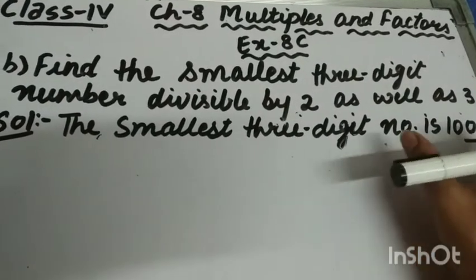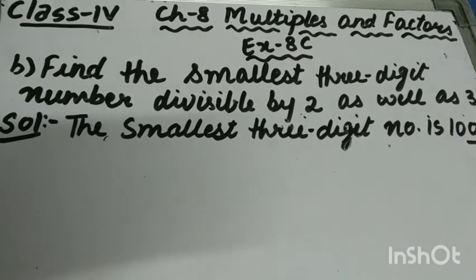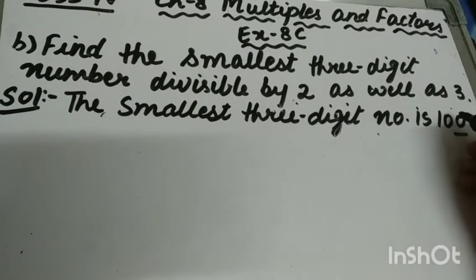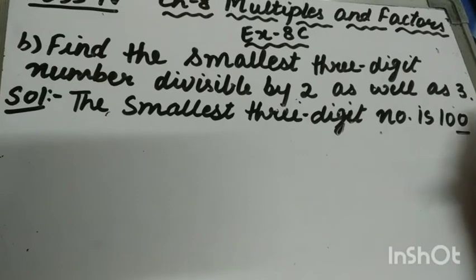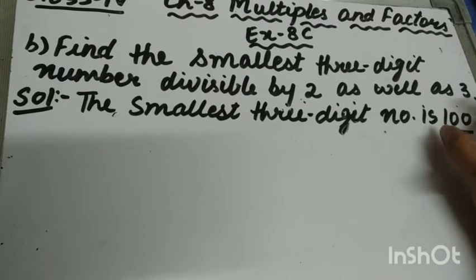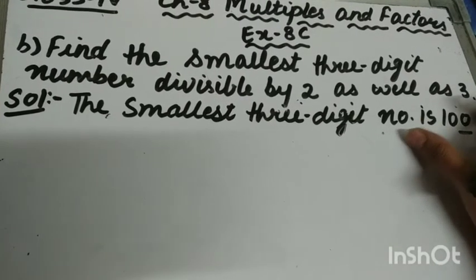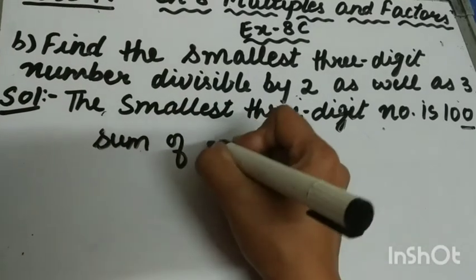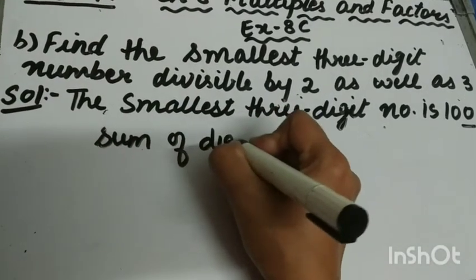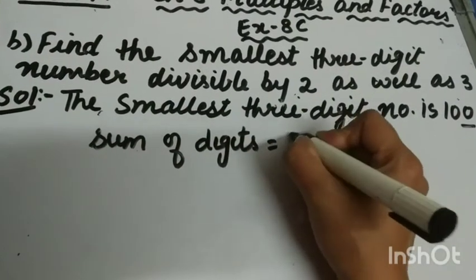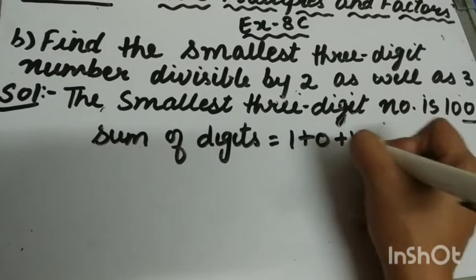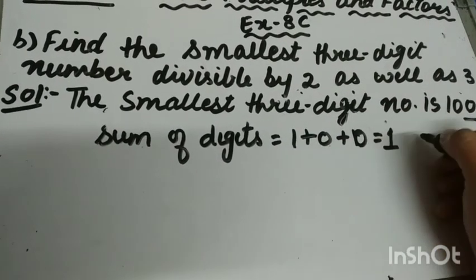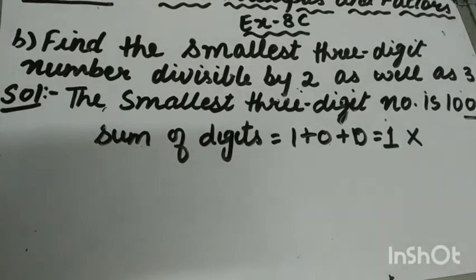The smallest 3-digit number is 100. Since it has 0 at its ones place, it is divisible by 2. But if we add the digits, the sum is 1 + 0 + 0 = 1, so 100 is not divisible by 3.